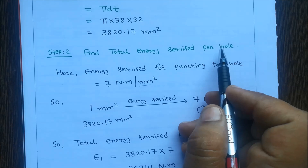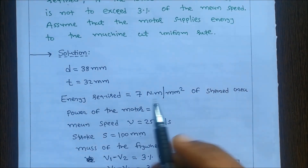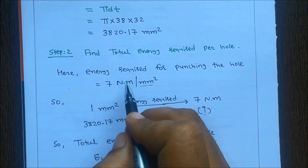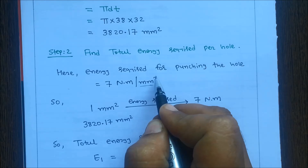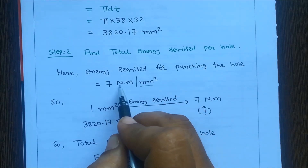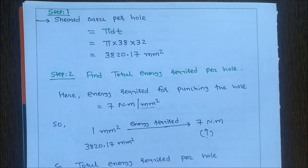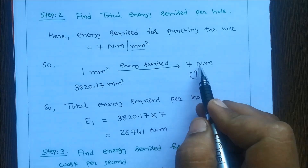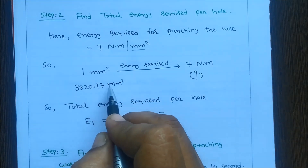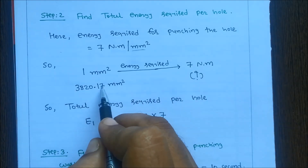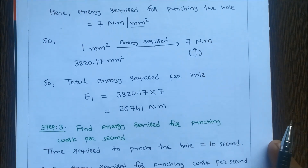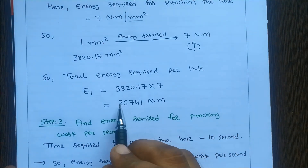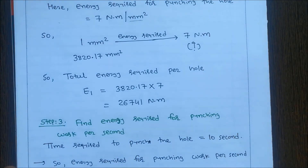Step 2: Find total energy required per hole. Energy required is 7 N·m per mm² of shear area, meaning in 1 mm² the energy required is 7 N·m. So total energy e1 = 3820.17 × 7 = 26741 N·m per hole.